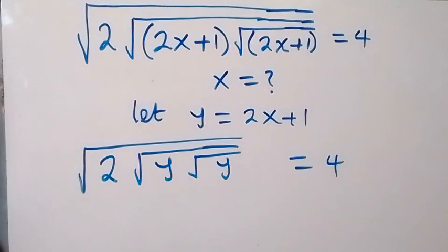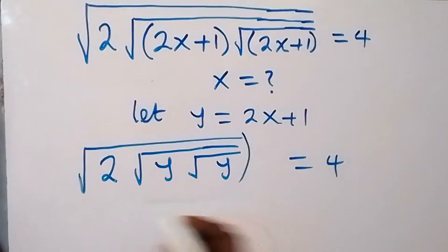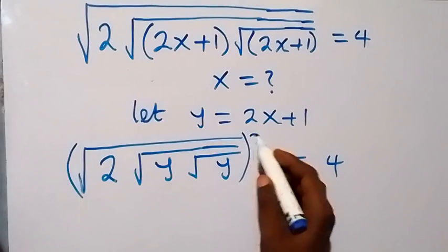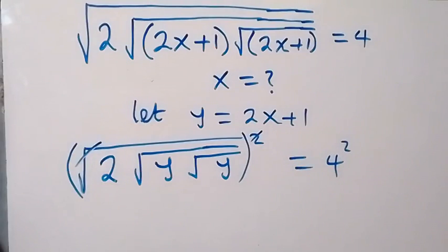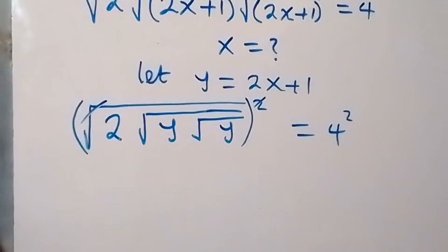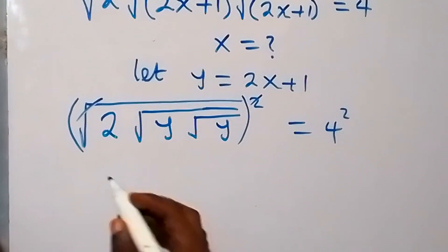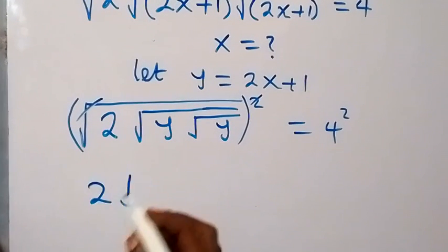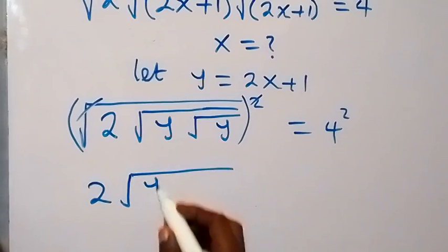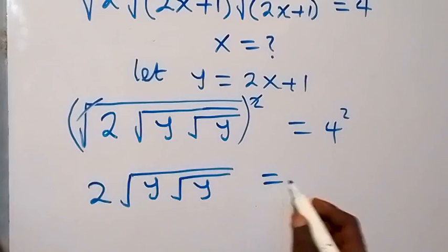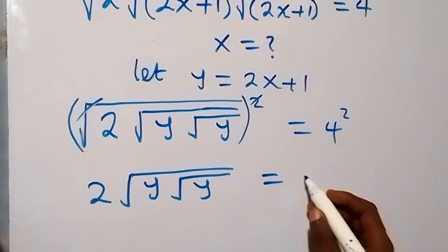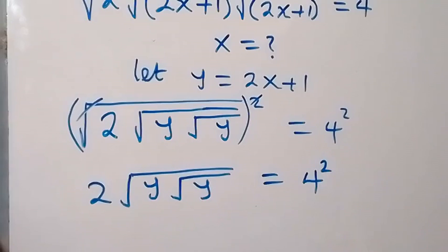From here we can square both sides of this equation. We square this side and also we square this side. The square cancels the square root here, and what we have left here will be 2 root y, then root y again, which is equal to 4 squared.